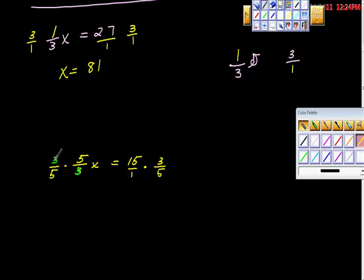And then look, 3 times 5 is 15. 5 times 3 is 15. We have 15 over 15, right? So we end up with 15/15 times x is equal to 45 over 5, which I think is 9, isn't it? But what's 15 over 15? 1. Right? This is equal to 1. And 1 times x is x, isn't it? So 45 over 5 is 9. All right?